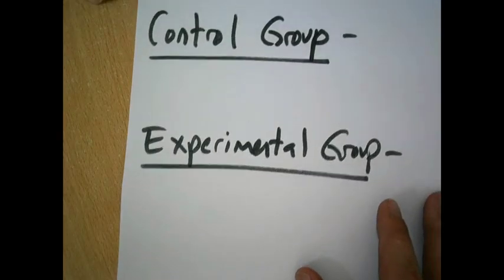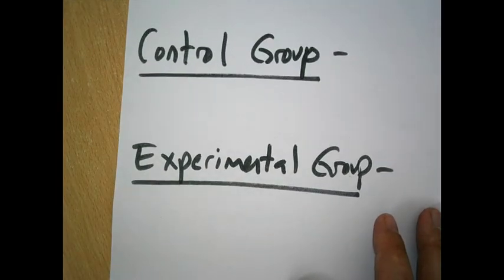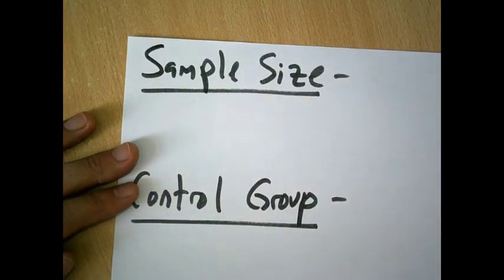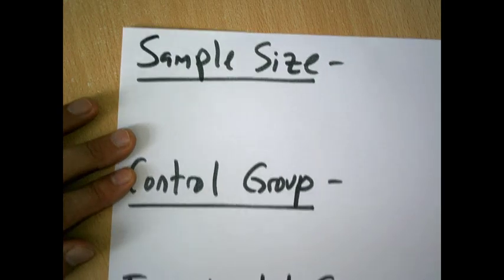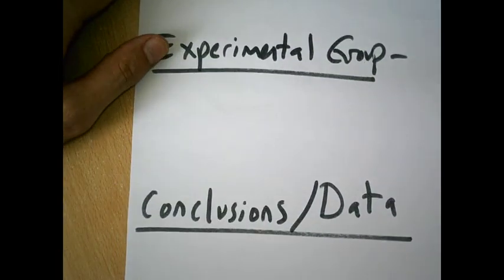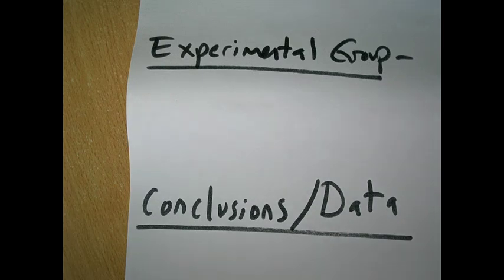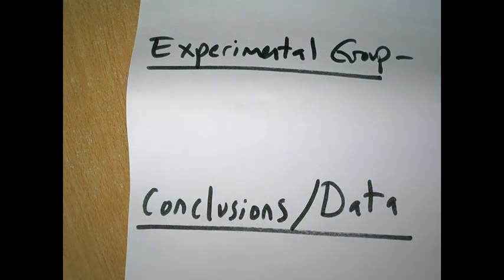I'm also going to see if the students can understand the importance of having a control group and an experimental group, and also think about the concept of sample size — how many times they'll do their experiment — and see how mathematically they come up with their conclusions. I'm hoping that the students will make a graphic representation, either in a chart or a data presentation table. We're going to break them into groups, have them share their ideas for conducting this experiment, and then carry it out.